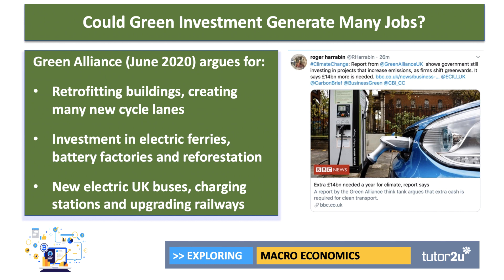The Green Alliance in the UK has just published a report arguing that one option is to drive forward green investment over the next few years as a catalyst for creating new jobs. They argue for retrofitting buildings, fitting home insulation and loft insulation, creating more cycle lanes, investment in electric ferries, new battery factories, reforestation, building more charging stations, more electric buses, and small-scale upgrades to railway systems. They argue that £14 billion a year is needed for the climate, and that these schemes are labour-intensive, can be highly region-specific, and can target areas of high unemployment.